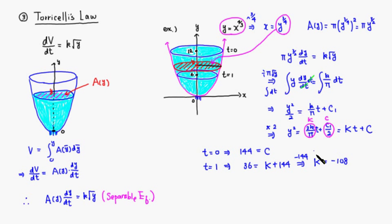Therefore, we have this equation: y squared equals negative 108t plus 144.